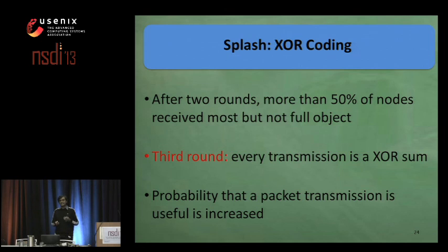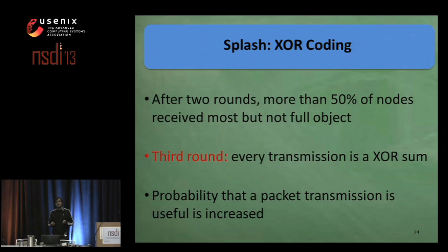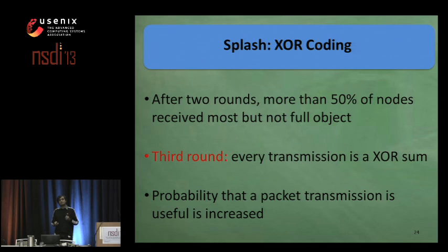As a coded packet contains information on multiple packets, the probability that a packet transmission is useful is increased. As we have witnessed in our experiments, XOR coding significantly helps in increasing the percentage of nodes having the full data object.